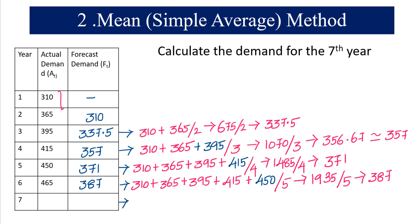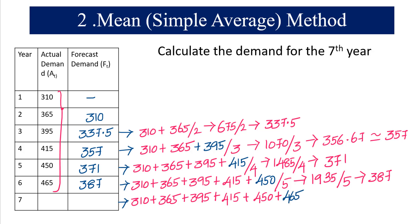For the seventh year we take the six years of information: 310 plus 365 plus 395 plus 415 plus 450 plus 465, divided by 6. This gives us 2400 divided by 6, which equals 400. The forecasted demand for period 7 is 400.